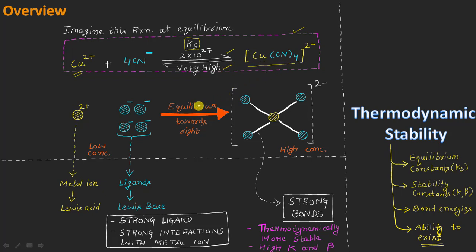Because of this high value of the equilibrium constant, the reaction will be favored in the forward direction, resulting in the formation of a complex which is square planar in nature. In the first lecture of this series, I mentioned that thermodynamic stability is associated with the measure of the extent of any complex to exist at equilibrium.